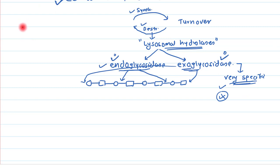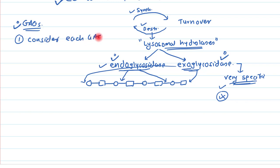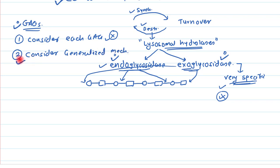Since we have many different types of glycosaminoglycans, there are two approaches to understanding their catabolism. The first is to consider each glycosaminoglycan individually, but that is lengthy. The second, which we will follow, is to consider a generalized mechanism that can be applied to any glycosaminoglycan.